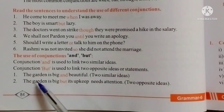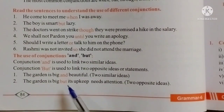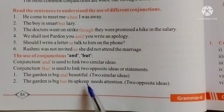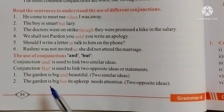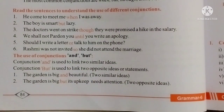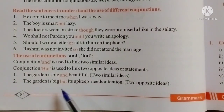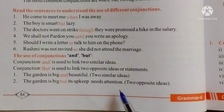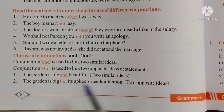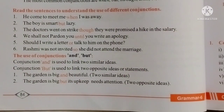The garden is big and beautiful. In this sentence, two similar ideas are shown — big and beautiful — so 'and' is the Conjunction. The garden is big, but its upkeep needs attention. In this sentence, two opposite ideas are shown, so 'but' is the Conjunction.